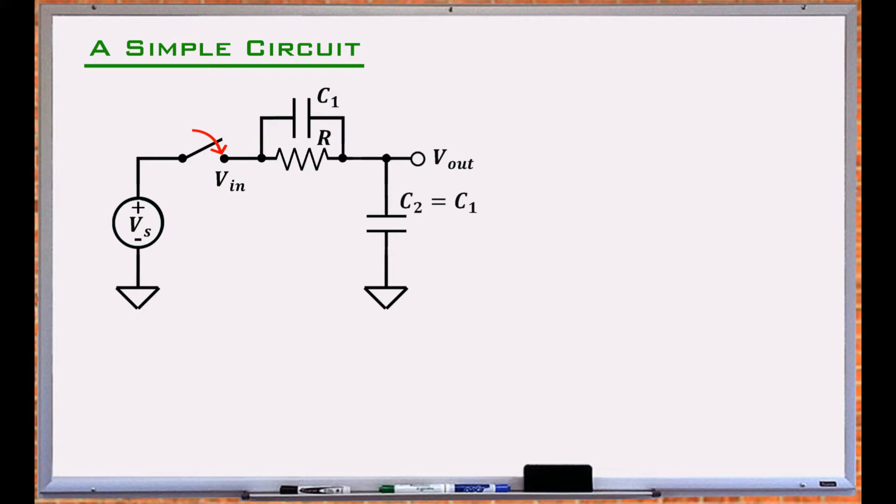Once the switch is turned on, Vin immediately rises from zero to Vs. Without C1, the circuit becomes a trivial RC circuit, and the output charges up in accordance with the RC time constant.